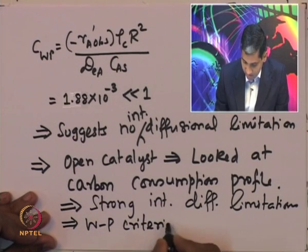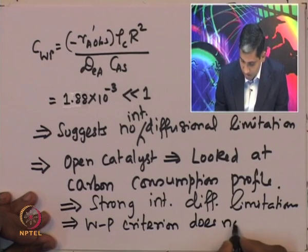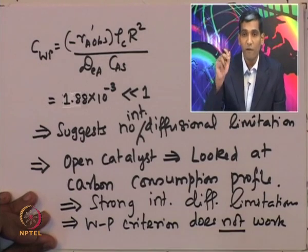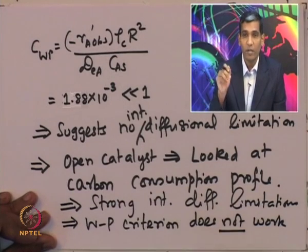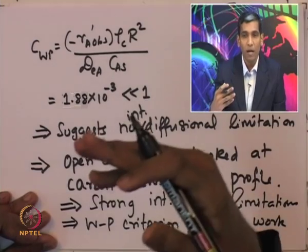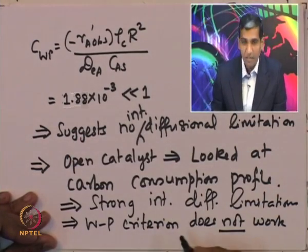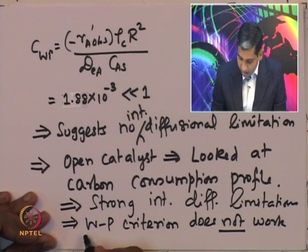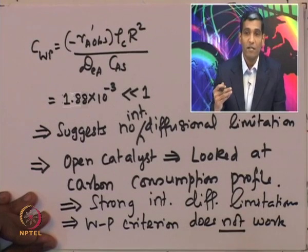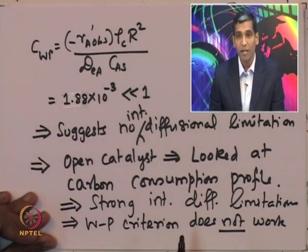However, after the reaction was conducted, the same researchers cut open the catalyst and measured the carbon consumption profile inside the catalyst. Once measured, the profile actually suggested that there was strong internal diffusion limitation. This shows that the Weiss-Prater criterion does not work for this reaction — the C + CO₂ → 2CO reaction — and does not correctly predict the presence of the internal diffusional limitations.